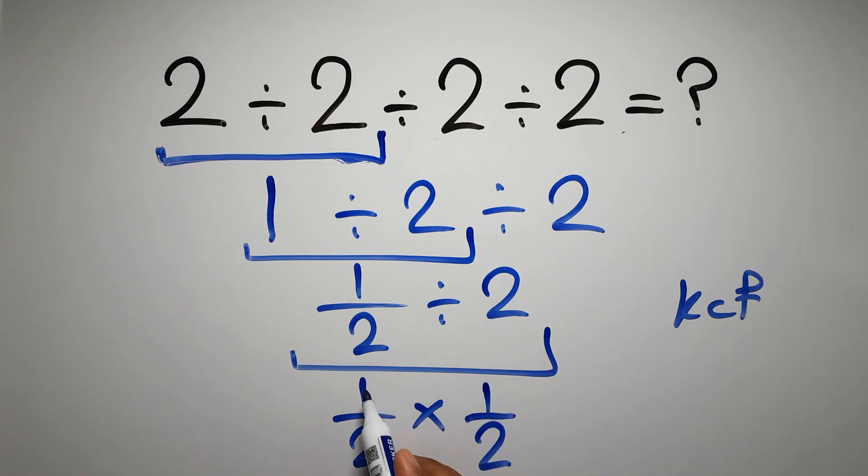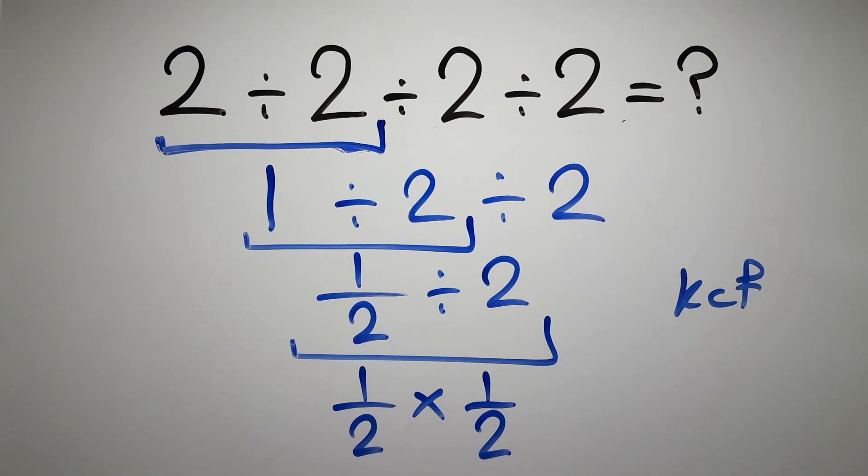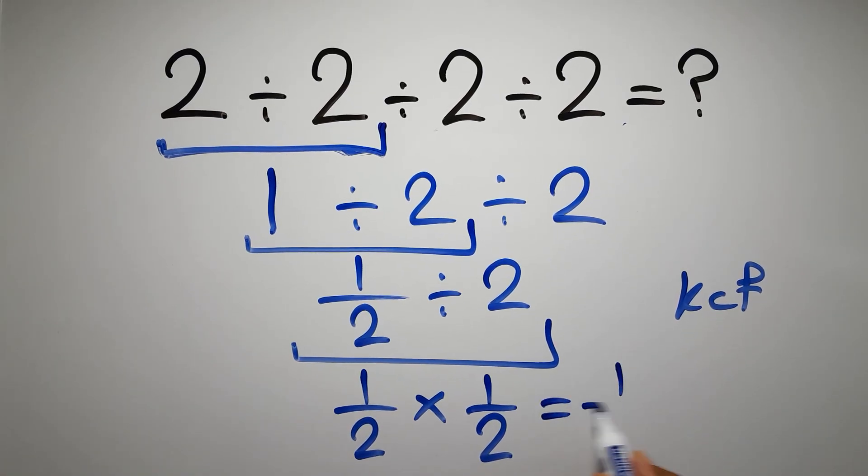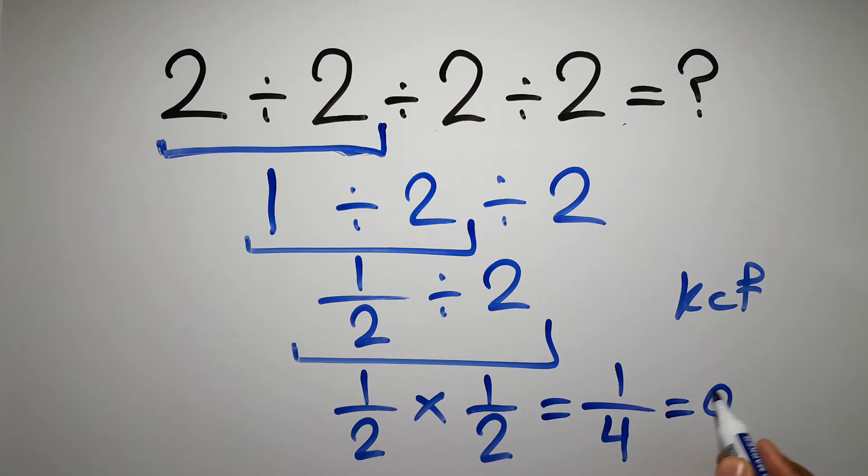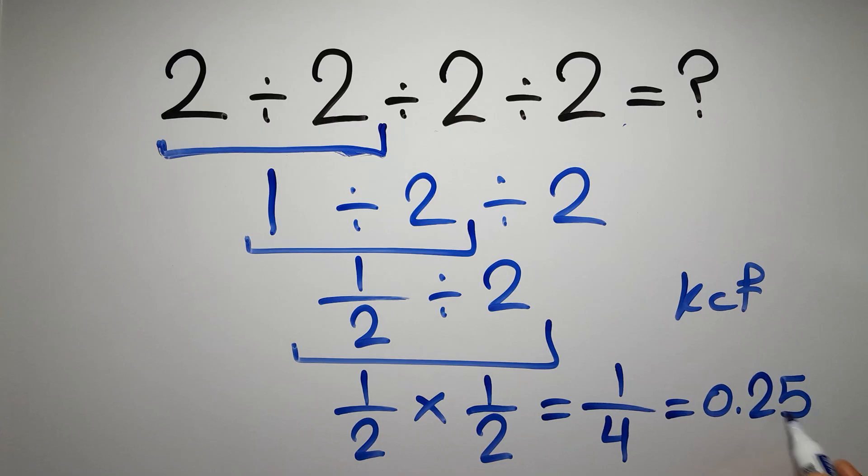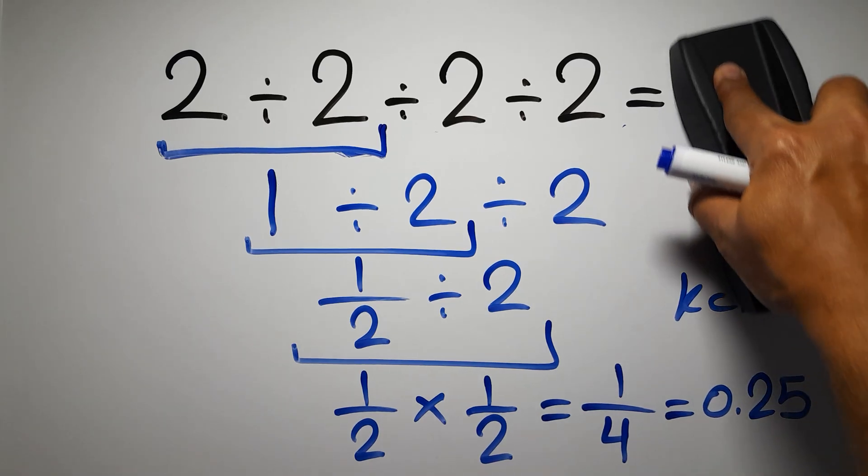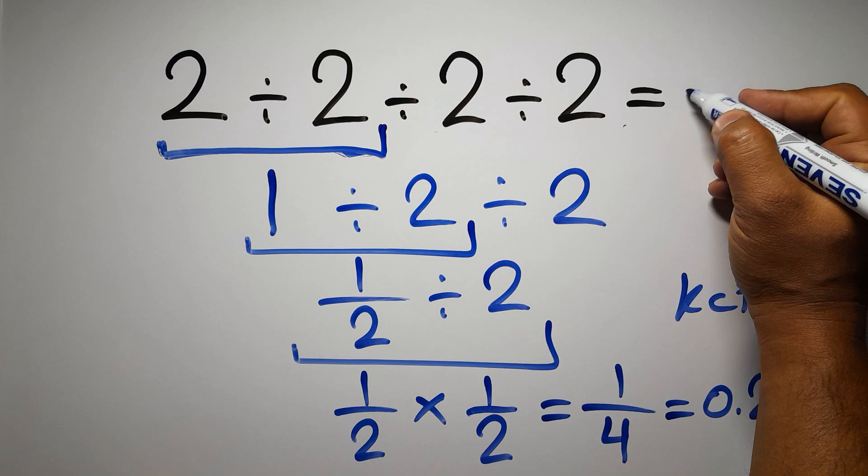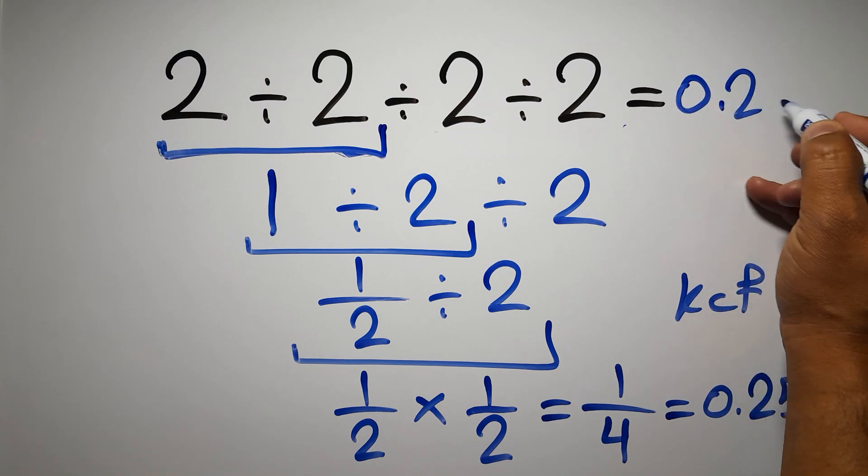So we have 1 over 2 times 1 over 2, which equals 1 over 2 times 2 gives us 4, so we have 1 over 4, or 0.25, and this is our final answer to this problem. The correct answer is 0.25.